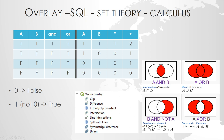We have the difference — A minus B — and we have the symmetric difference, which is called XOR, where we take the union but without the intersection. Sometimes it's practical to use this symmetric difference, but it is one of the more specialized operations. So basically, these are the overlay tools that you use.